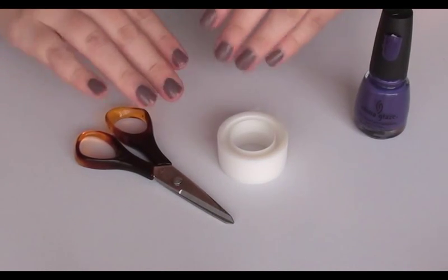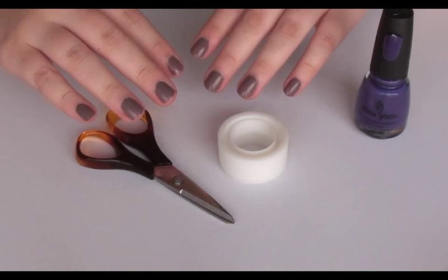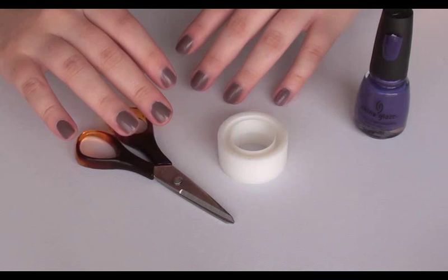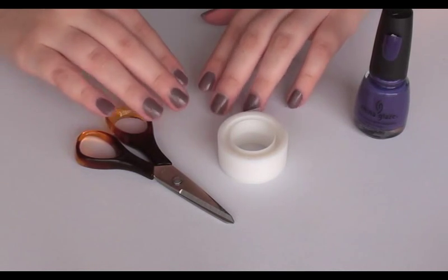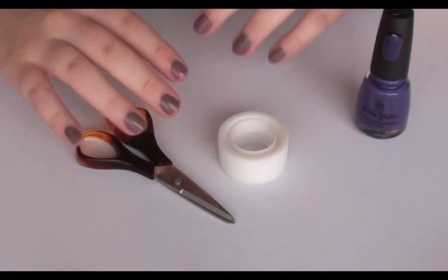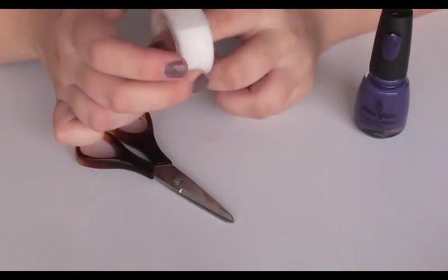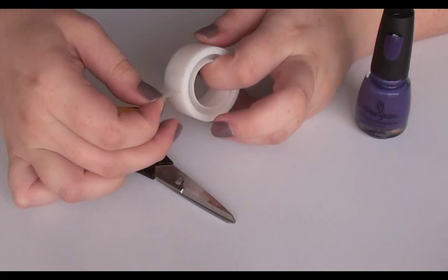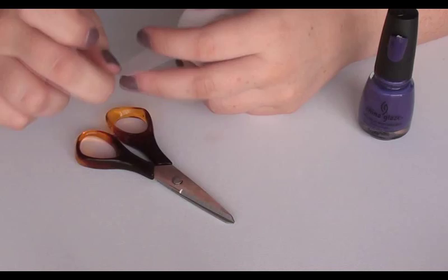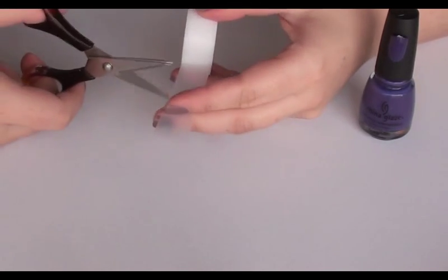Now once your base color is dry, you want to make sure that it is completely, completely dry. If it's at all damp or at all not dried through, it may peel up with tape. So the next step once it's dry is to get a length of tape about that long, say about 2 inches, and cut it off.